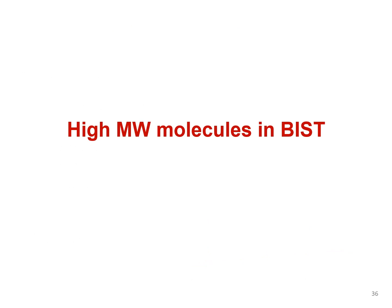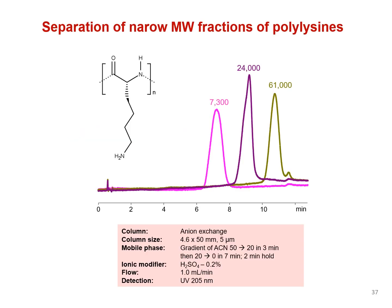We previously showed how high molecular weight polylysine oligomers can be retained using BIST. Let's now explore some other applications of high molecular weight molecules being retained with BIST. To generate separation in a reasonable time, we'll employ a gradient to switch from a higher retention mobile phase to a lower retention mobile phase. Retention using BIST and a gradient elution on polylysine can also produce good molecular weight resolution for higher molecular weight polymers. In this example, group resolution based on average molecular weight was achieved.